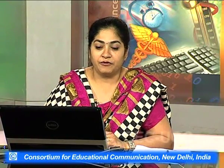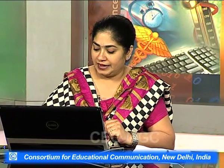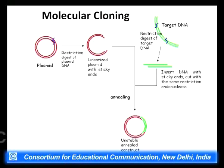We digest both the plasmid and the target DNA with certain enzymes called restriction endonucleases, which you must have learned about in the previous lecture. These restriction endonucleases are extremely specific — they cut at a specific point. Using the same restriction enzyme on both creates similar sticky ends. We then linearize the plasmid with sticky ends and the insert DNA with the same sticky ends and proceed to anneal the two.